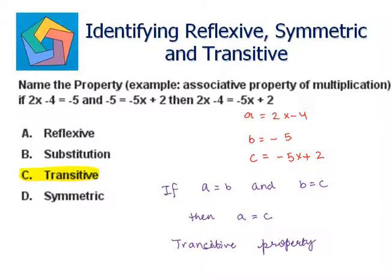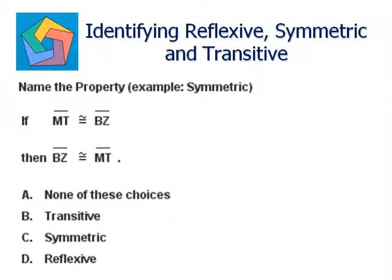Next problem: name the property, example symmetric. If segment MT is congruent to segment BZ, then BZ is congruent to MT. Suppose I take a as segment MT and b as segment BZ.